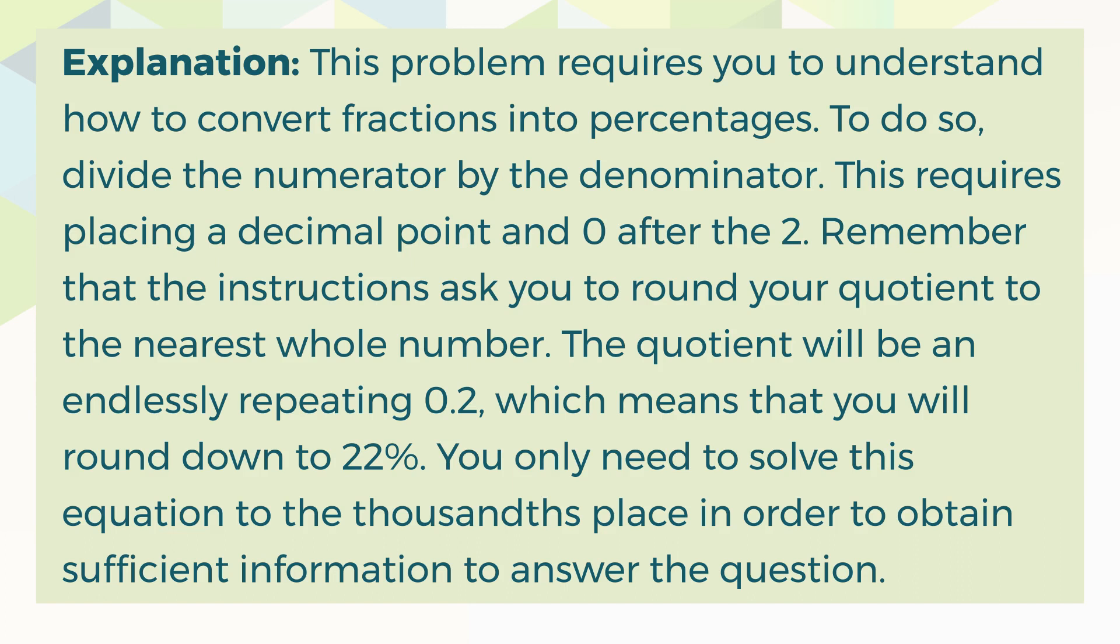The quotient will be an endlessly repeating 0.2, which means that you will round down to 22%. You only need to solve this equation to the thousandths place in order to obtain sufficient information to answer the question.